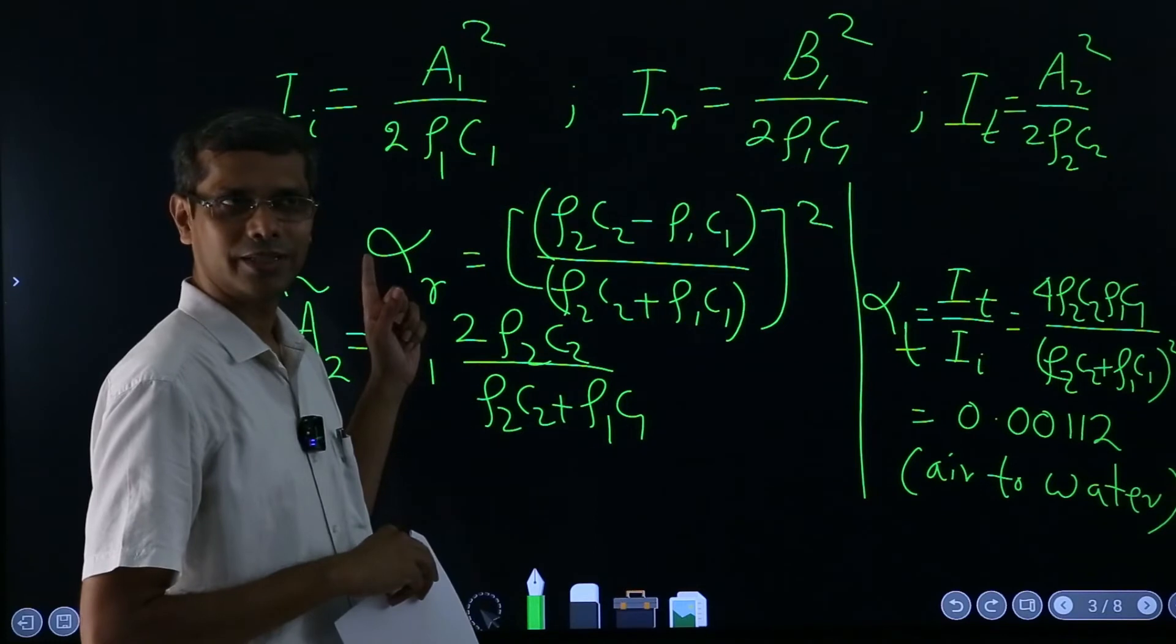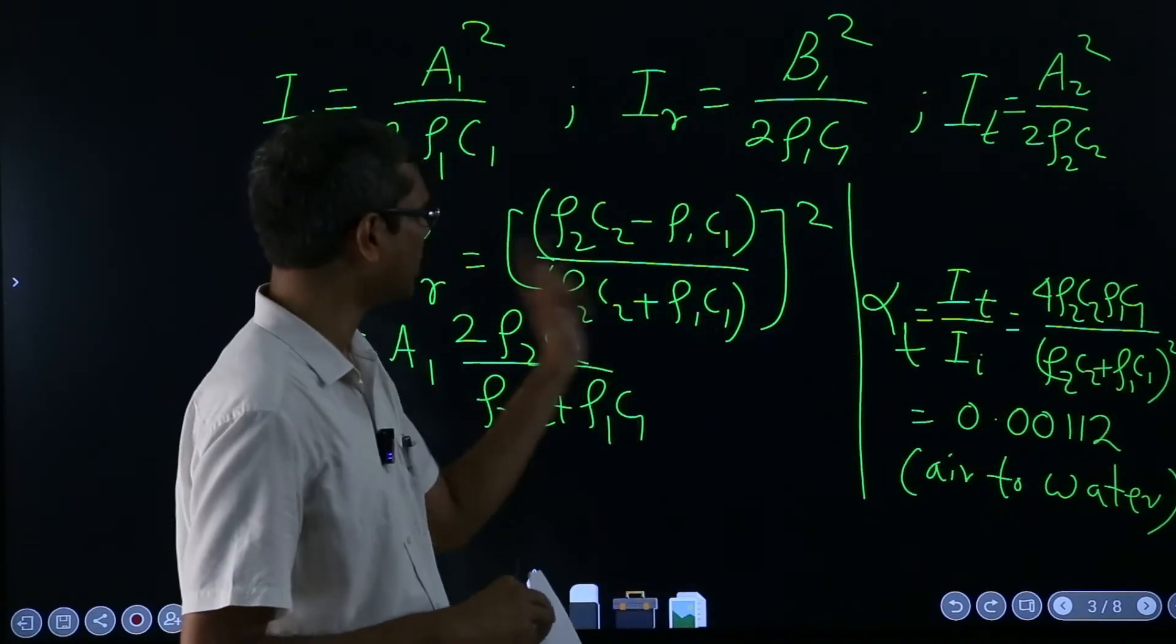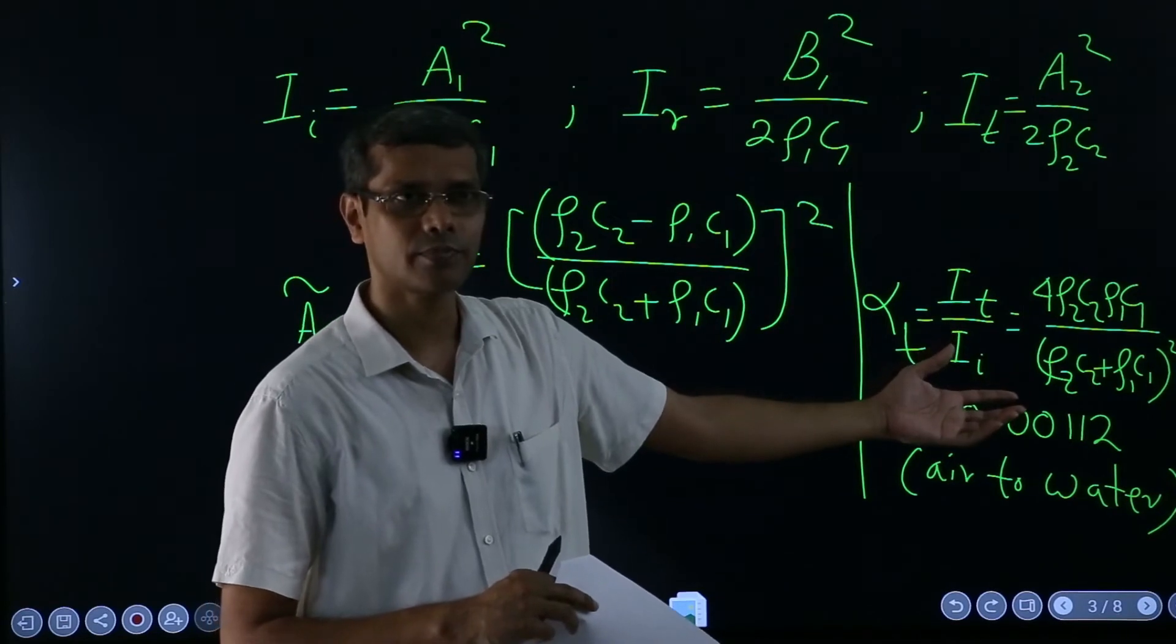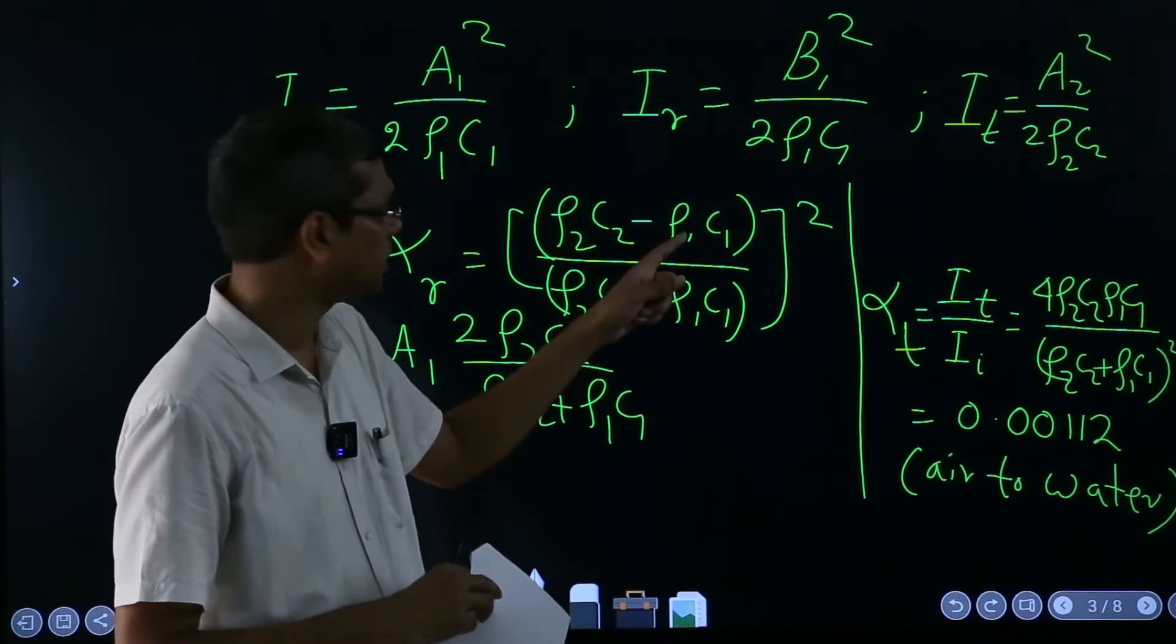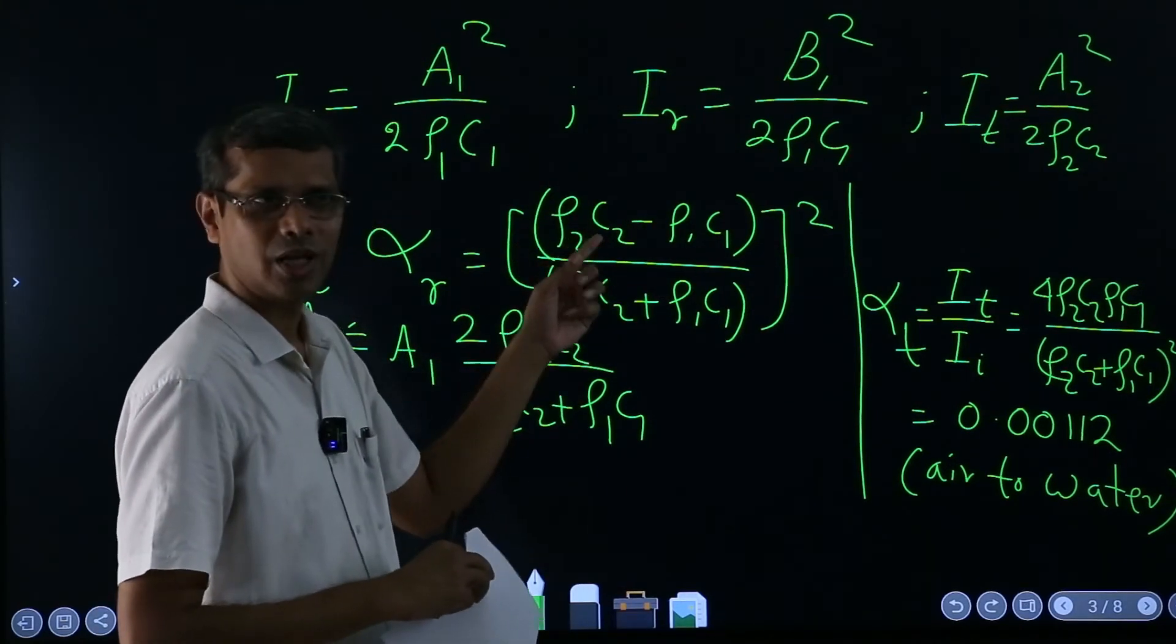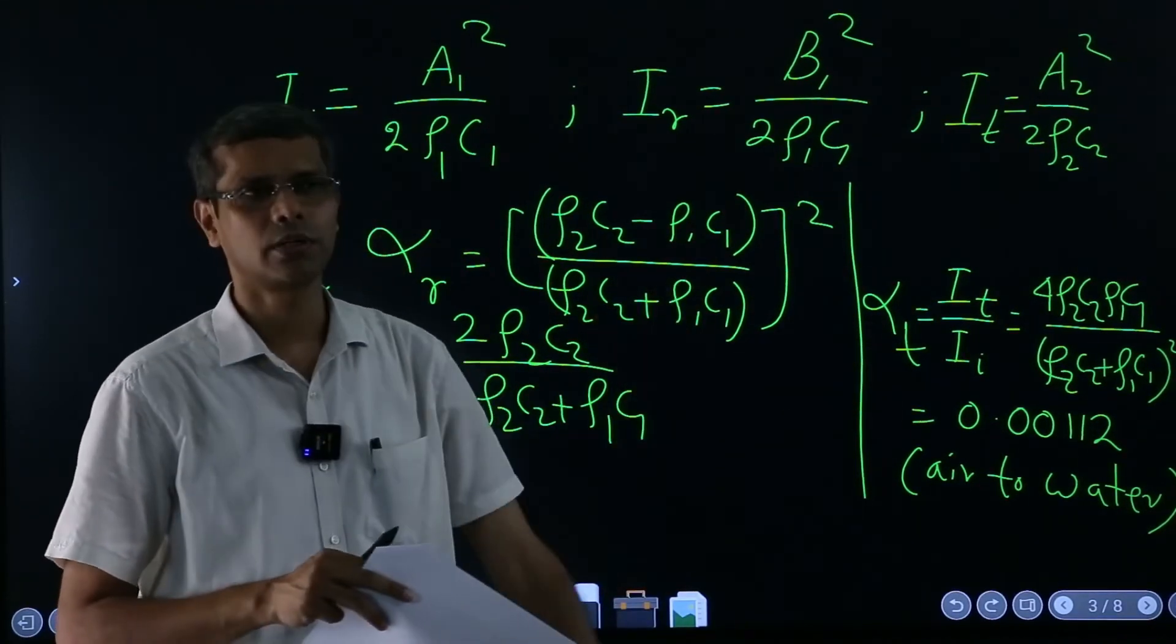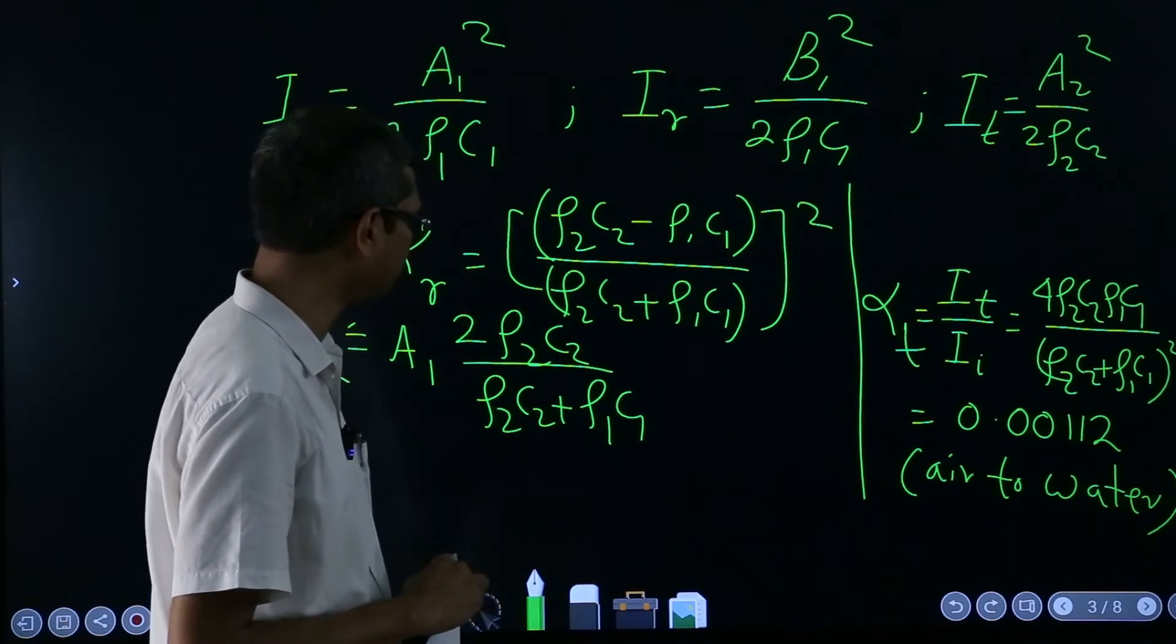So this becomes almost 0, that means hardly any energy is getting reflected back, everything will be transmitted, because this is nothing but 1 minus this only. Because whatever energy is coming either is getting reflected back or getting transmitted. So when this becomes almost 0, so this will become almost 1. So irrespective of, say, they could be completely different materials, ρ₁ could be completely different than ρ₂ and c₁ from c₂, but if the products are almost equal, they are two different things. If the products are almost of the equal magnitude, you will get a transmission of acoustic energy, okay.